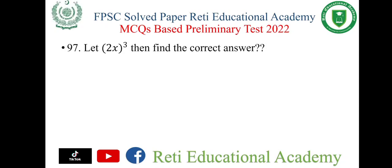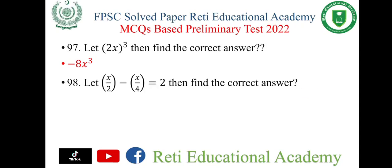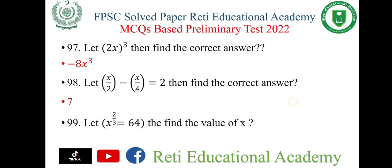Question number 97: Let 2x power 3 — the right answer is minus 8x power 3. Question number 98: Let x power 2 upon 4 equals 2 — the right answer is 7. Question number 99: Let x power 2 upon 3 equals 64 — find the value of x, and the right answer is 16.